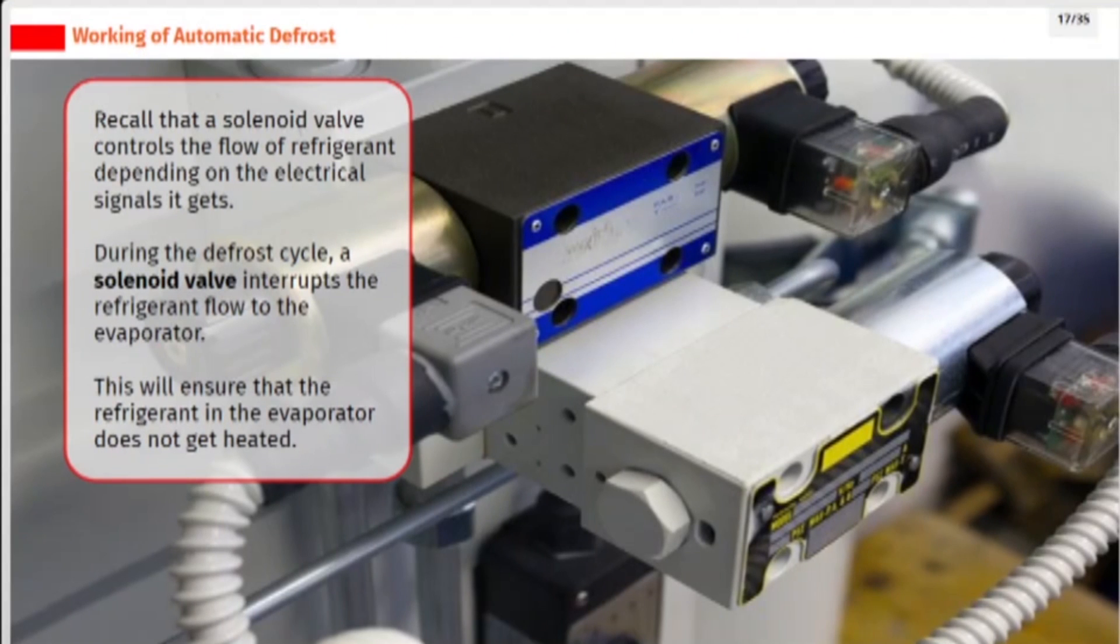Recall that a solenoid valve controls the flow of refrigerant depending on the electrical signals it gets. During the defrost cycle, a solenoid valve interrupts the refrigerant flow to the evaporator. This will ensure that the refrigerant in the evaporator does not get heated.